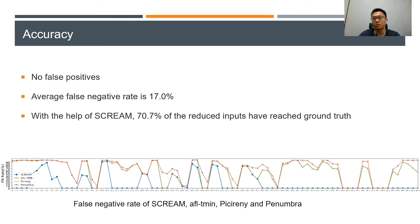With the help of our tool, about 70% of the reduced inputs have reached ground truth.